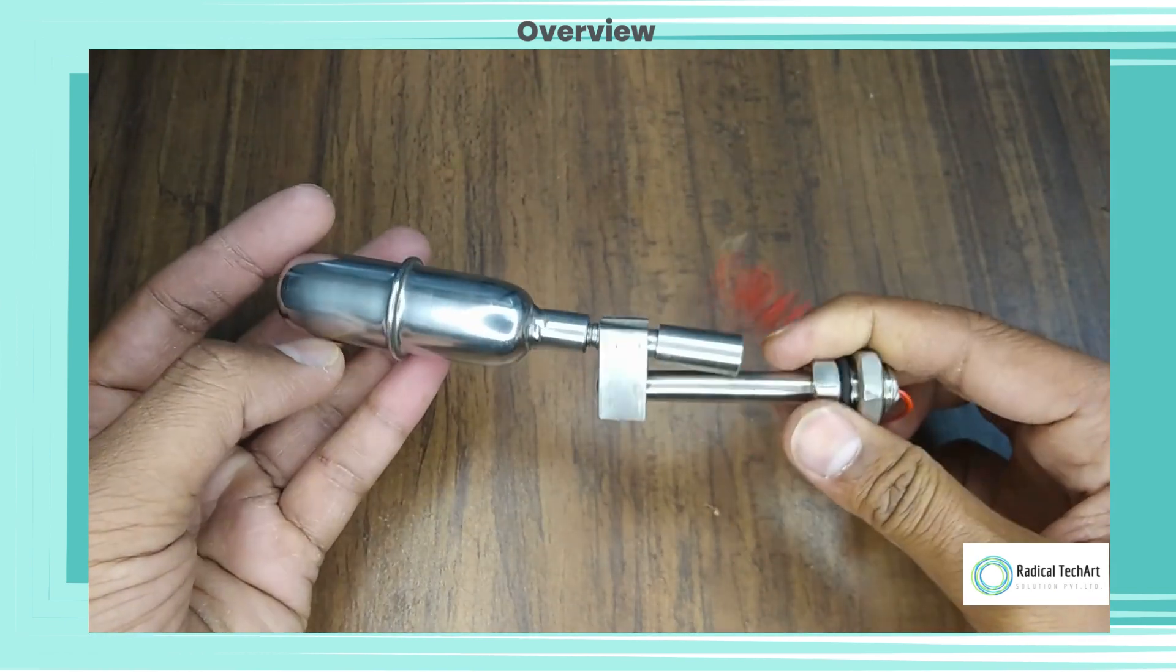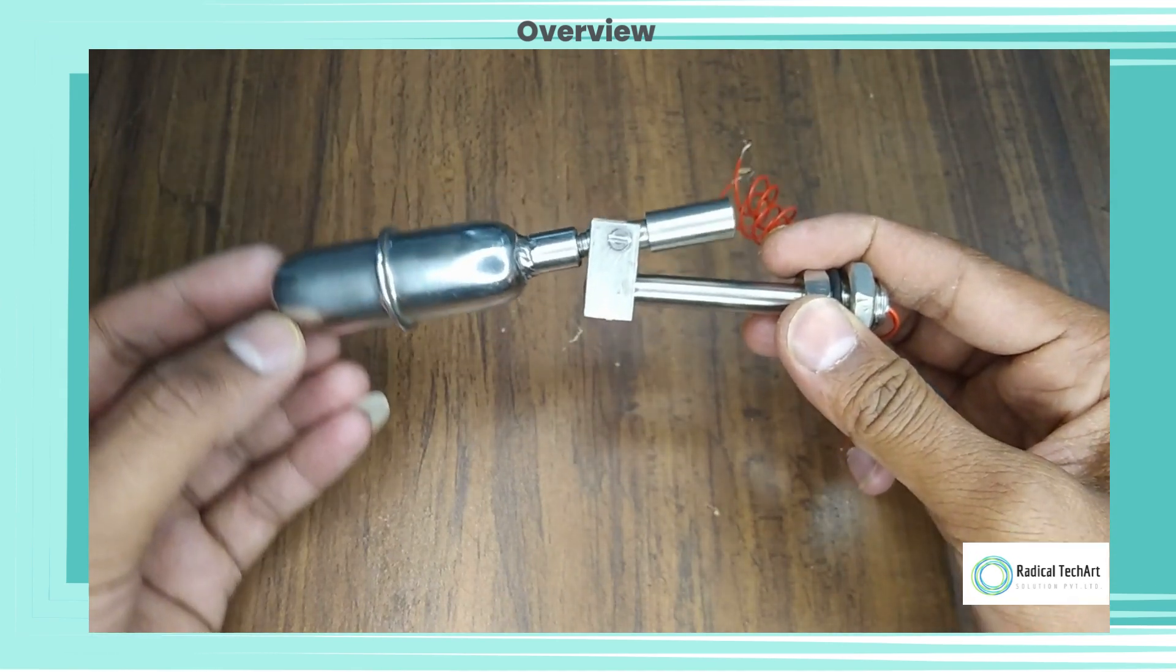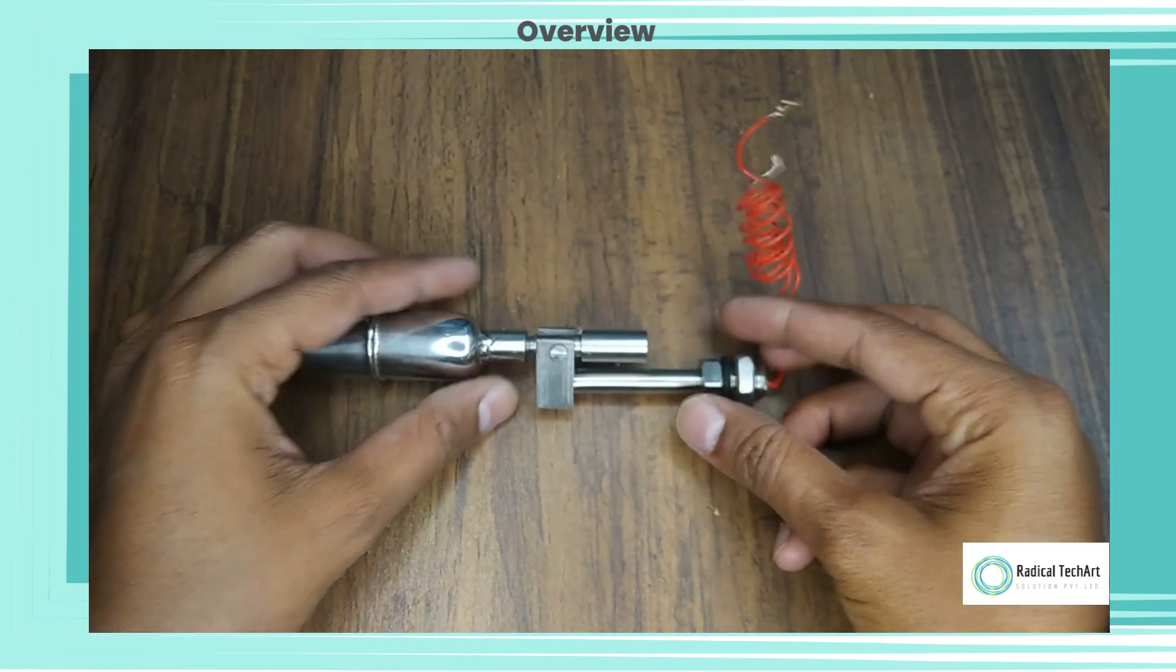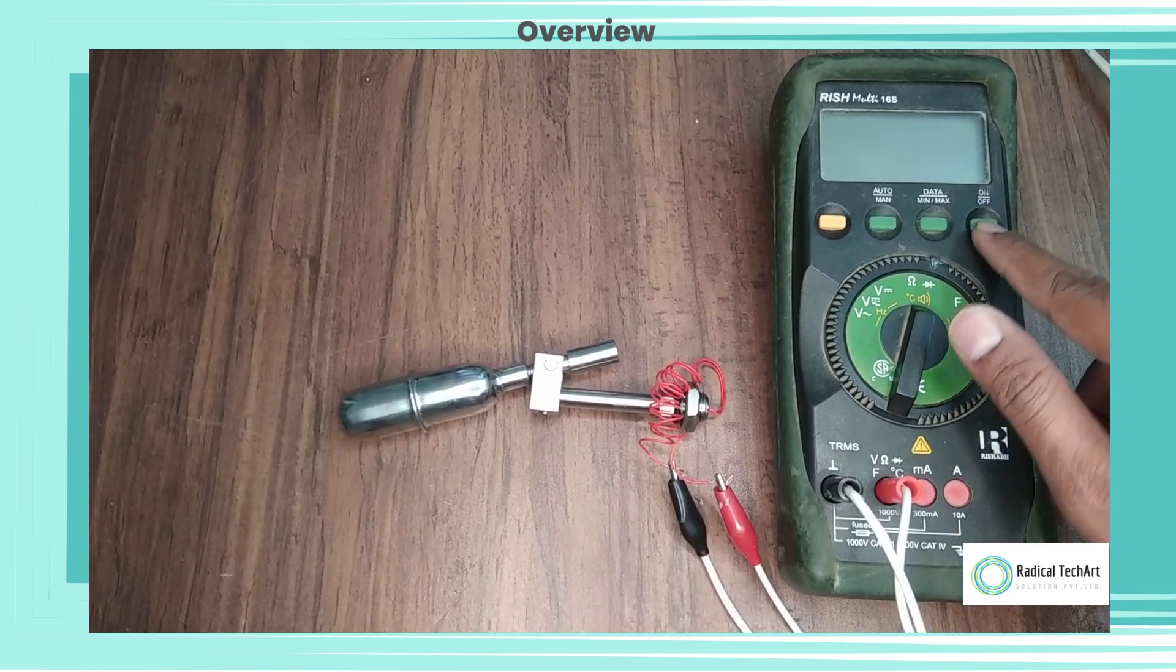The float is designed to rise and fall with the level of the liquid, and it is connected to the lever arm or rod. The lever arm or rod is in turn connected to the switch mechanism, which is usually a microswitch or a relay.